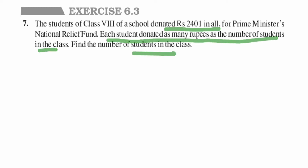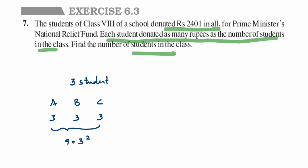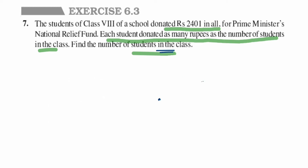To understand this, let's take a small example. Suppose there are three students A, B, and C in the class — three students means each student donates three rupees. If there are four students, each donates four rupees. So three students donating three rupees each gives nine rupees, which is three squared. Similarly, five students donating five rupees each gives 25, which is five squared.